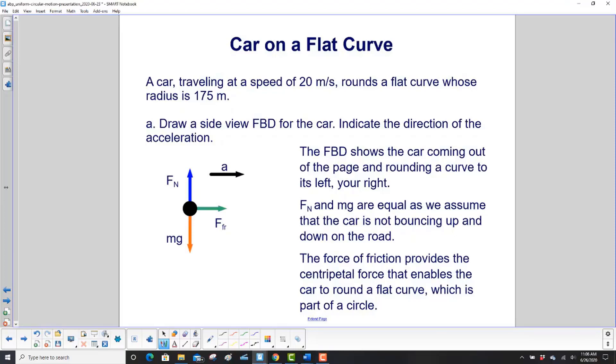Let me summarize everything we said on the previous slide, because this is pretty important to get. The free body diagram shows the car coming out of the page and rounding a curve to its left, your right. The normal force and mg are equal, as we assume that the car is not bouncing up and down on the road. It has good shock absorbers. And finally, the force of friction provides the centripetal force that enables a car to round a flat curve, which is part of a circle.